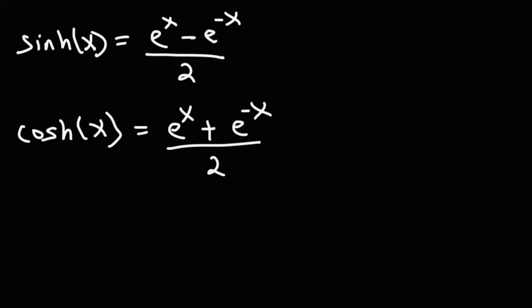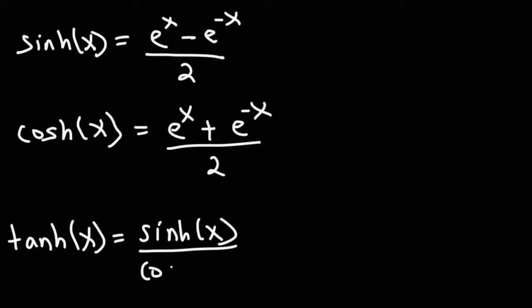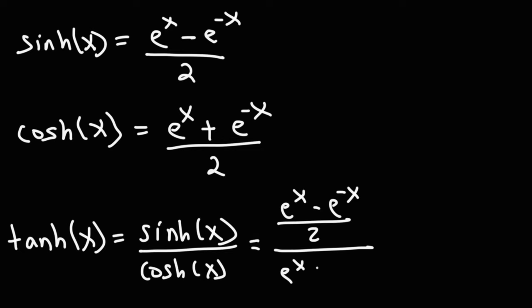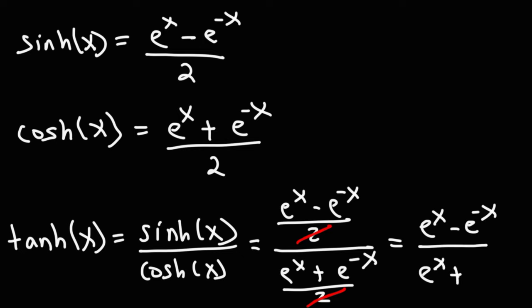You may want to write these down because we'll be using these formulas a lot in certain practice problems. Hyperbolic tangent is equal to hyperbolic sine divided by hyperbolic cosine. If we take hyperbolic sine in its exponential form and divide it by hyperbolic cosine, we get: e to the x minus e to the negative x over e to the x plus e to the negative x.